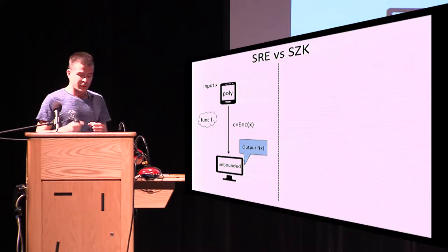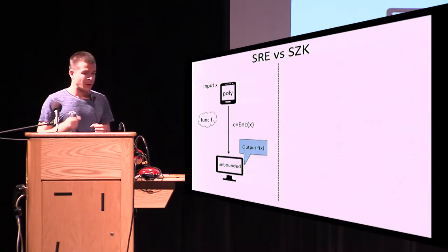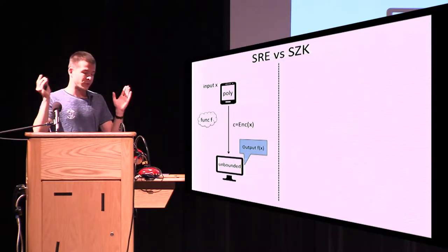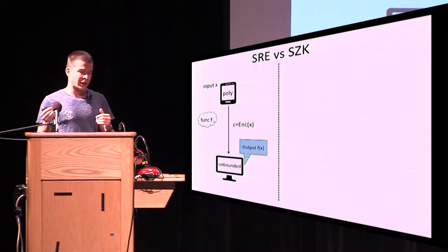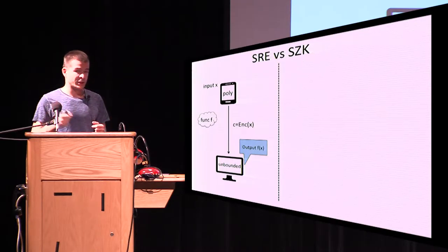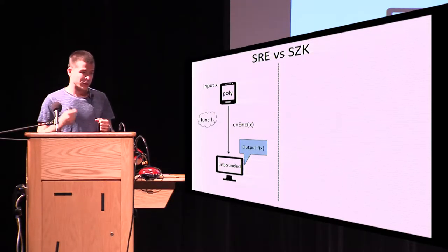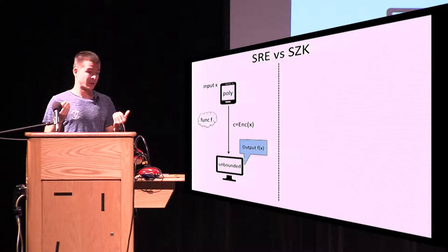So far I described the setting where we have some fixed function f and for this function you have a statistical randomized encoding system. With every function you can associate a corresponding language. I assume throughout this talk that functions are binary — every input mapped to 0 is not in the language, and every input mapped to 1 is in the language. So now I can consider the set of all languages that have this statistical randomized encoding system, and this complexity class I call SRE.